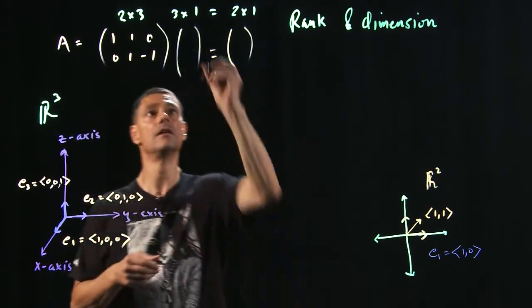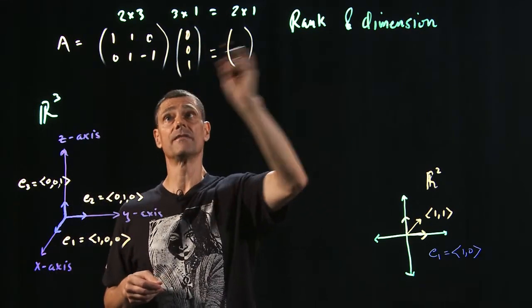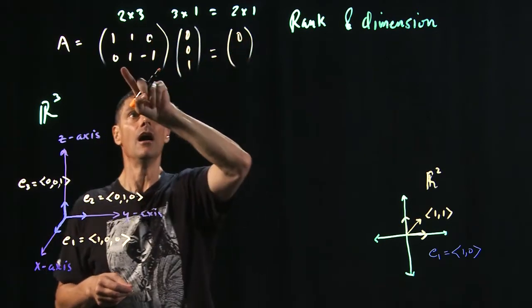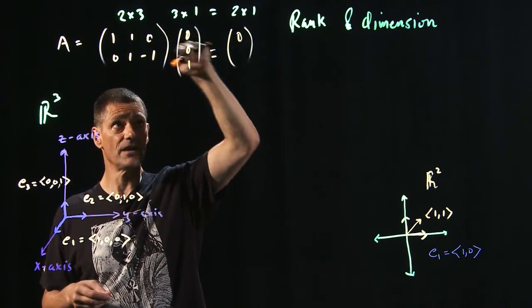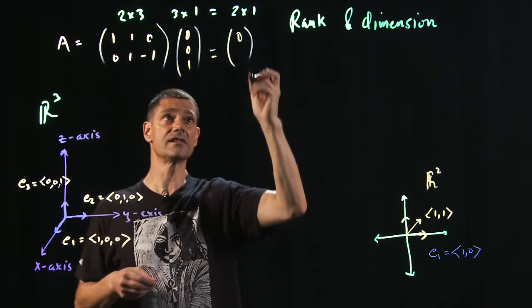Okay. So 0, 0, 1. 1 times 0 is 0. 1 times 0 is 0. 0 times 0 is 0. 0 times 0 is 0. 1 times 0 is 0. Minus 1 times 1 is negative 1.